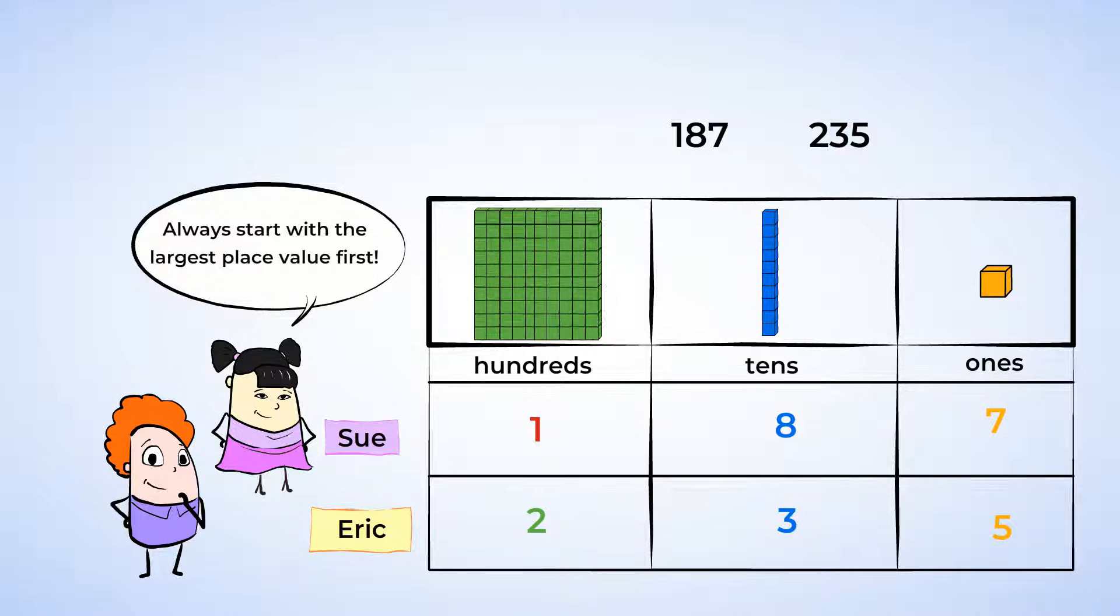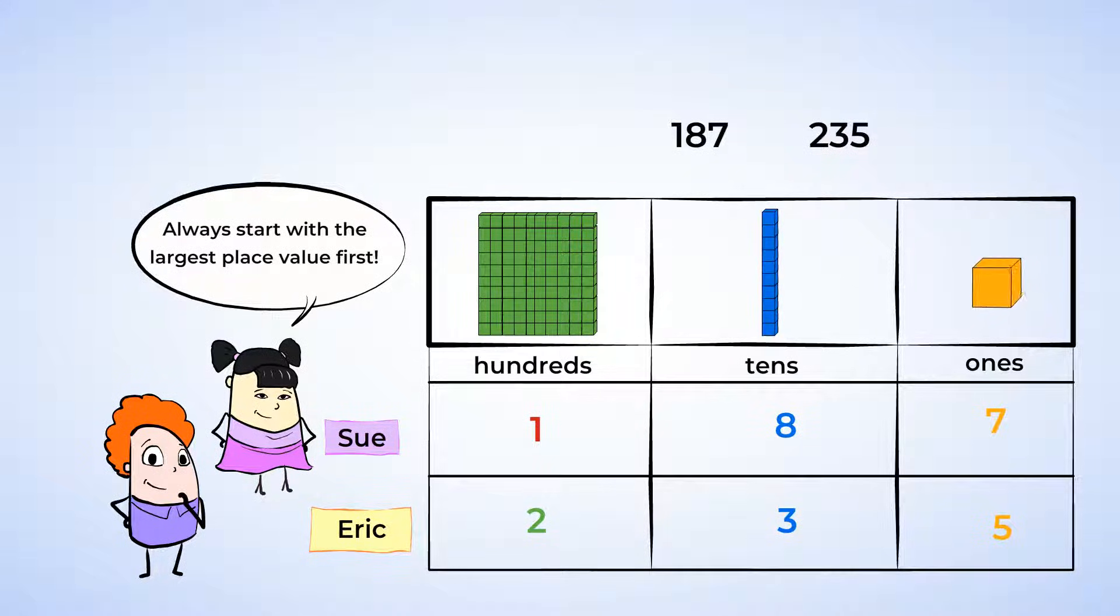The hundreds place is bigger than the tens place, or the ones place, so we're going to start there. Another way to remember this is the largest place value is always the digit furthest to the left.